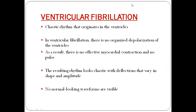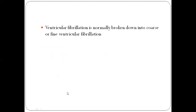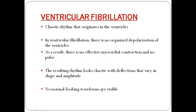Ventricular fibrillation is a chaotic rhythm originating from the ventricles — similar to atrial fibrillation, but here only the ventricles flicker. It doesn't even contract properly; it just keeps moving a little bit without proper contraction. That's why there is not much active contraction activity and no particular pattern. There is no organized depolarization; as a result, there is no effective myocardial contraction and no pulse. You cannot see a normal P, QRS, and T in ventricular fibrillation — it is a very chaotic ECG with different patterns not corresponding to any single wave.